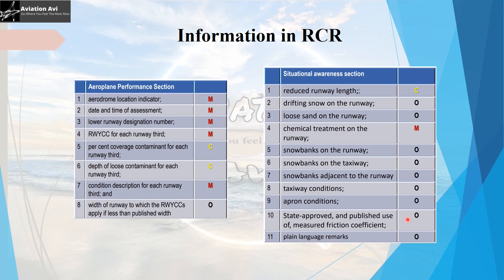The situational awareness section includes: reduced runway length (conditional), drifting snow on runway (optional), loose sand on runway, chemical treatment of runway (mandatory if applicable), snow banks on runway or taxiway (optional), snow banks on adjacent runway (optional), taxiway and apron conditions (optional), state-approved use of measured friction coefficient, and plain language remarks (optional). These make up the 11 elements of the situational awareness section.